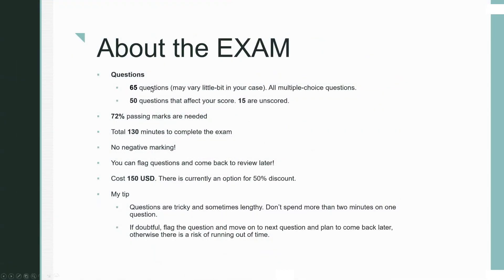This exam has 65 questions, though it may vary a little. These are all multiple choice questions. 50 questions affect your score and 15 are unscored — those are new questions AWS is trialing. You won't know which are scored or unscored, so all 65 questions are important. A 72% passing mark is needed. You get 130 minutes total, and there is no negative marking, so target to answer all questions. You can flag a question and come back to review.